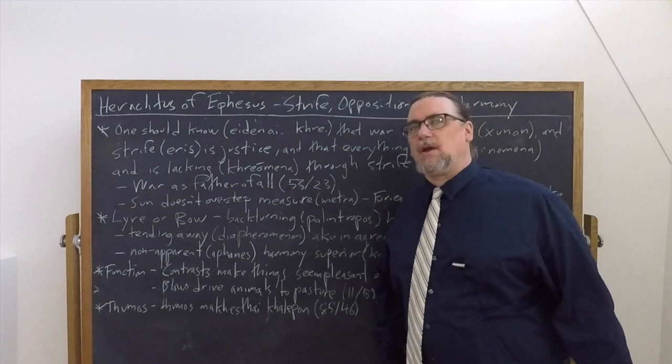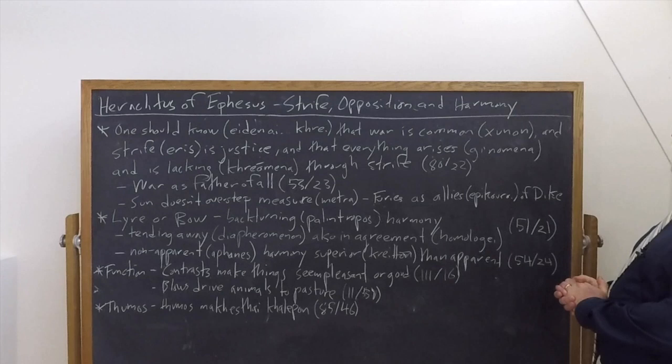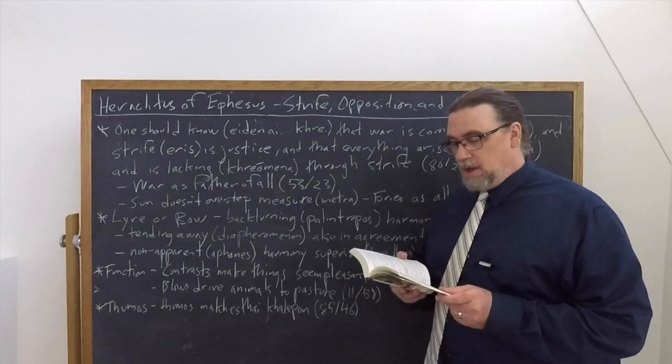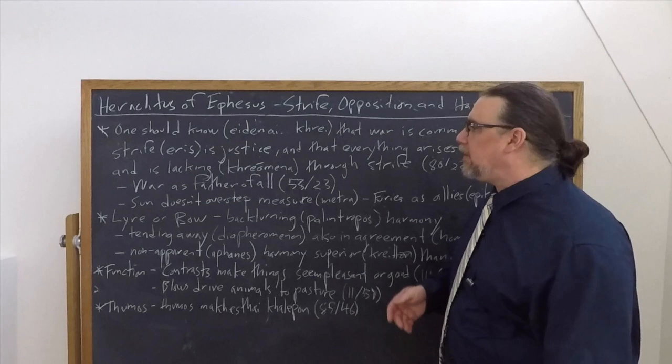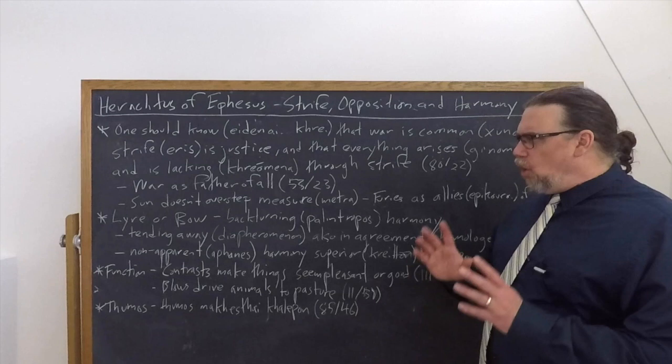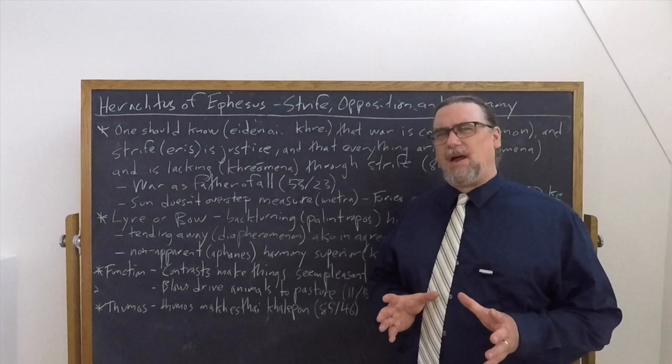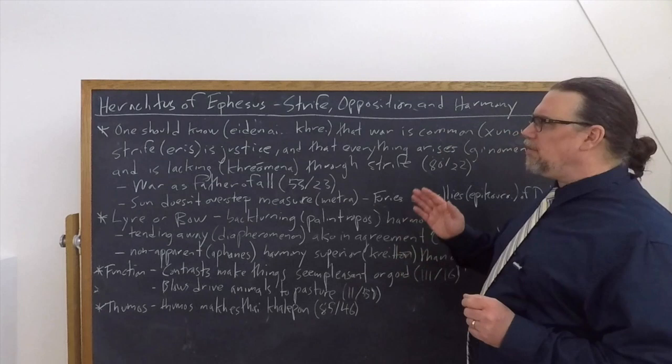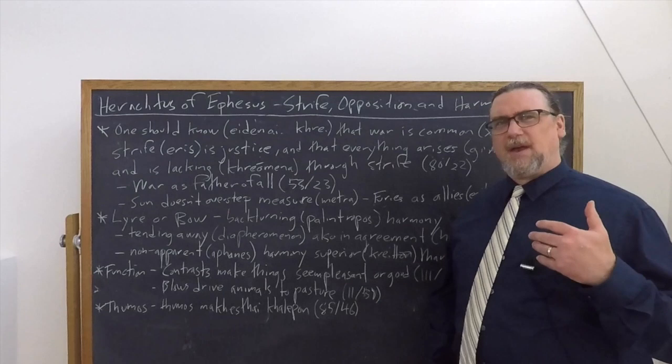Now this other part, everything arises, another translation for this is everything happens in accordance with strife and necessity. Now the term there, chreiomenon, that could be translated as things that are necessary, because chreo gives us the chre, which means it is necessary. By the time of Heraclitus, that's already sort of a common Greek way of using that verb.